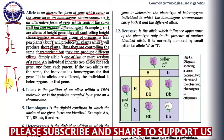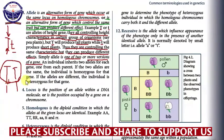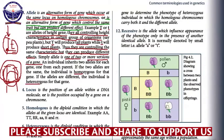For example, capital T and capital T — the two alleles of the height gene — these are homozygous. Capital T and small t — these are heterozygous. Homo means same, so homozygous means both alleles are the same. Heterozygous means the alleles are different. Now I hope we have understood well regarding the definition of an allele.